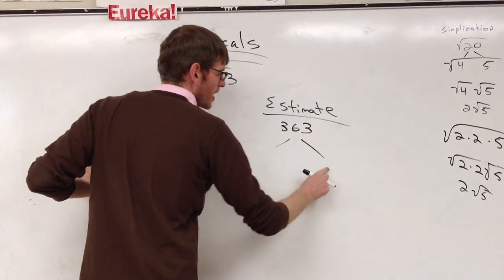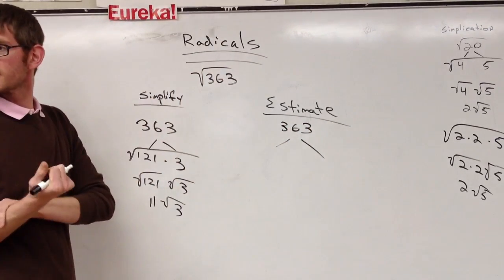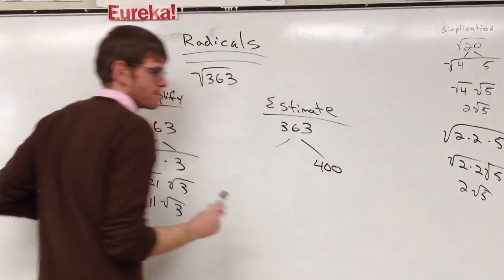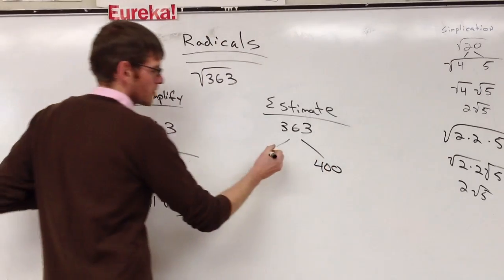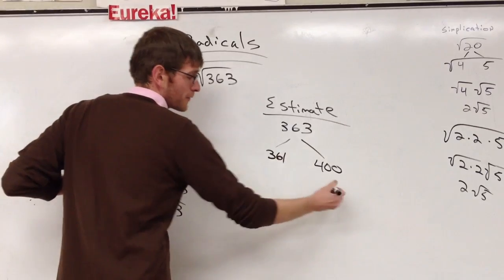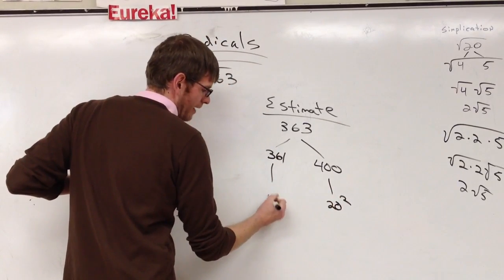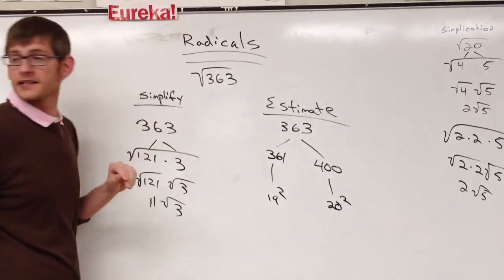Okay, so what's a perfect square that's bigger than 363, Lisa? 400. And what's the one smaller? 361. And 400 is 20 squared, right? And then that means this one has to be 19 squared, right?